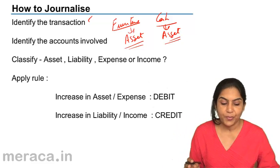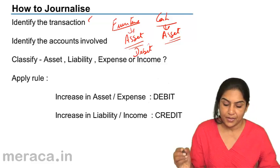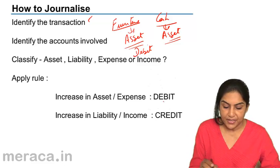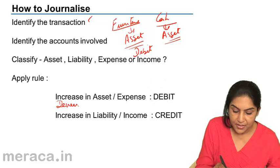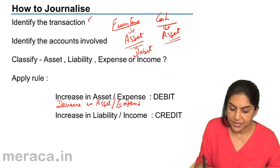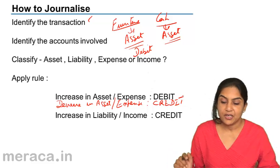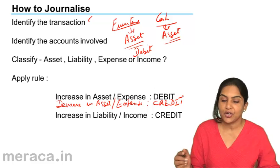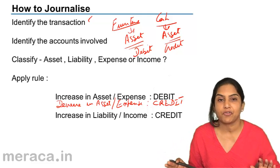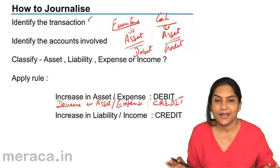Then, apply the rule. Increase in asset is a debit. Therefore, furniture is a debit. If increase in asset is debit, then decrease in asset is credit. Cash has decreased because we have paid cash — cash has gone out. Therefore, cash would be credit. So debit and credit represent the two aspects of a transaction. There will always be a debit in a transaction and an equal amount of credit in that transaction.